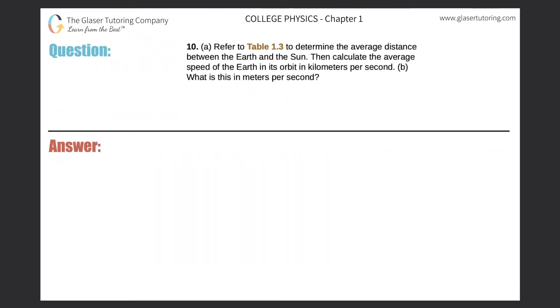Number 10, Part A. Refer to table 1.3 to determine the average distance between the Earth and the Sun, then calculate the average speed of the Earth in its orbit in kilometers per second.